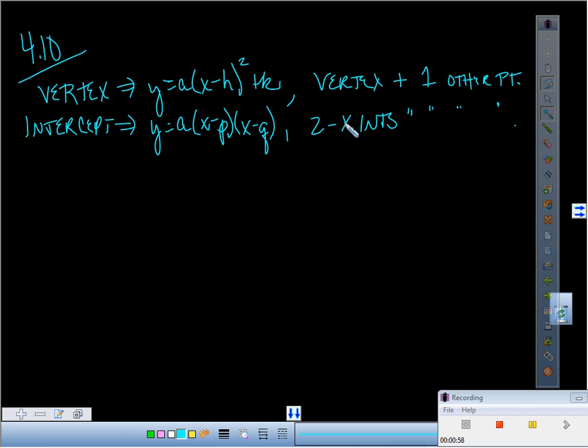Now, when you do these, what are you supposed to do first? Find A. Okay, so here's the last one. The last one is standard form. What does standard form look like? AX squared plus BX plus C. When am I going to use standard form? That's exactly right. When you're given three points.